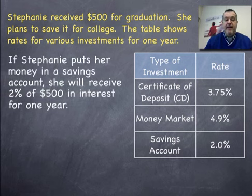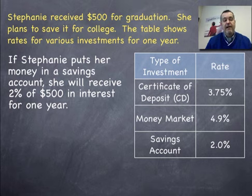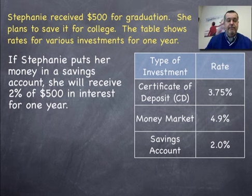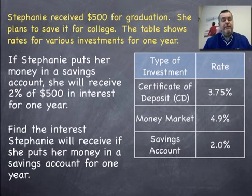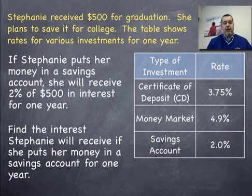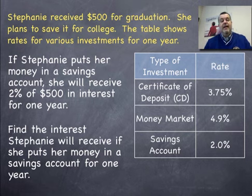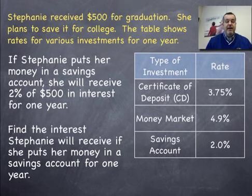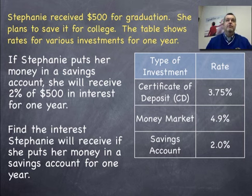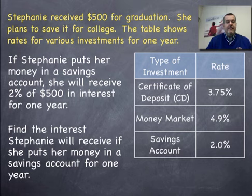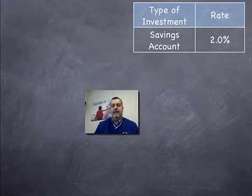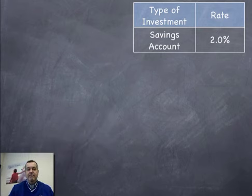If Stephanie puts her money in a savings account, she will receive 2% of $500 in interest for one year. The bank is going to pay her for the ability to use her money to lend to other people. Banks use other people's money to give loans; they make interest on those loans, and they use some of that to pay interest for the privilege of borrowing your money. So Stephanie is going to put it in a savings account with a 2% interest rate.